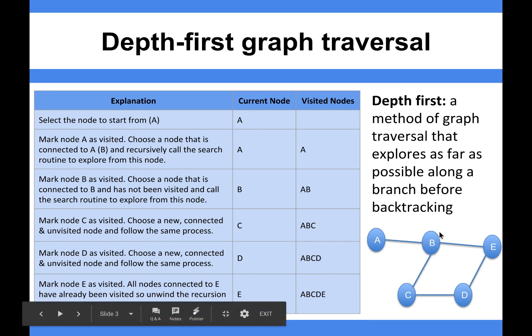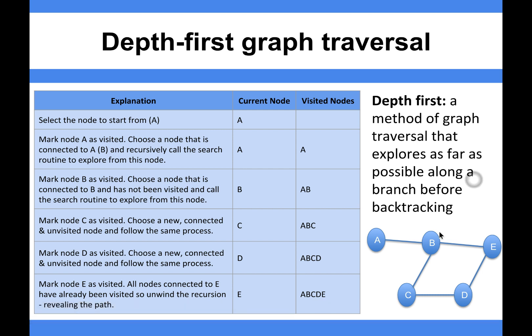Depth-first graph traversal is a method of traversing a graph that explores as far as possible along a branch, and then it will backtrack. We'll start at node A, mark node A as visited, and choose one of the nodes connected to it.